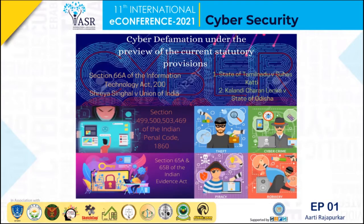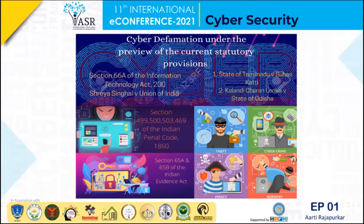In my opinion, there has to be a rapid evolution of the IT Act itself in line with changing technology. The technology is changing so rapidly that the IT Act also needs to evolve with these rapid changes. For example, Section 67 of the IT Act provides punishment for whoever transmits or publishes obscene material in electronic form, but it does not expressly talk about cyber defamation. Currently, we do not have an exact provision that expressly and solely addresses cyber defamation.